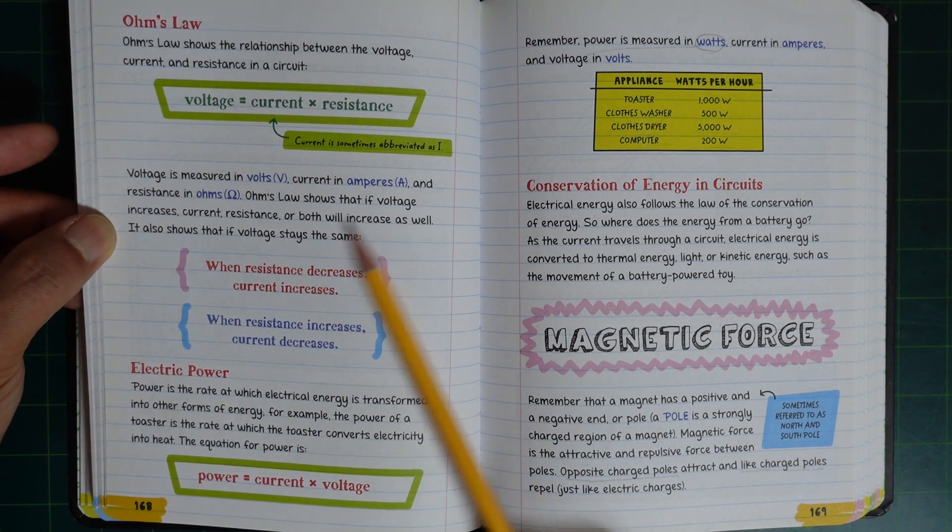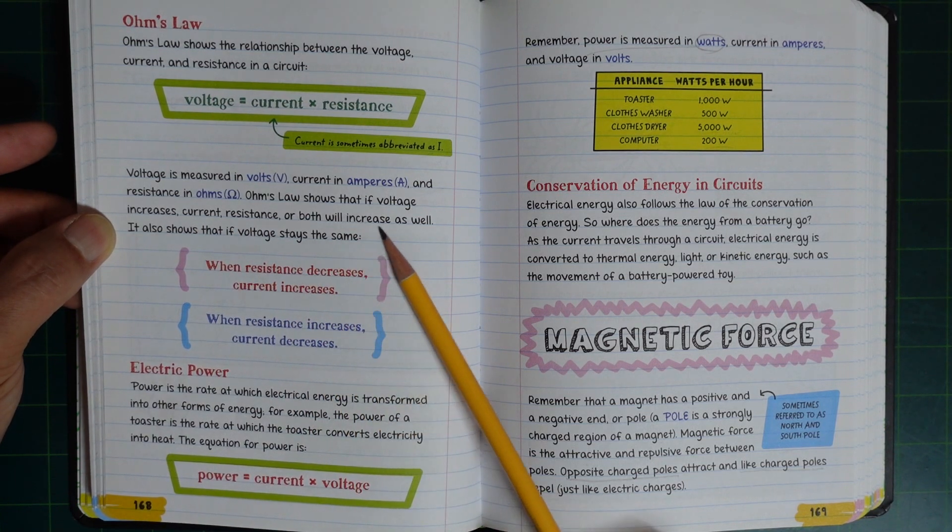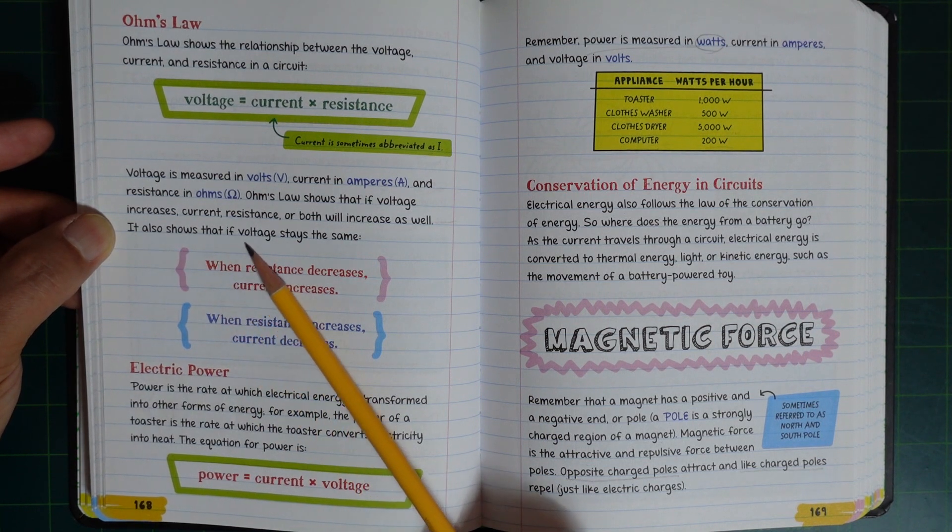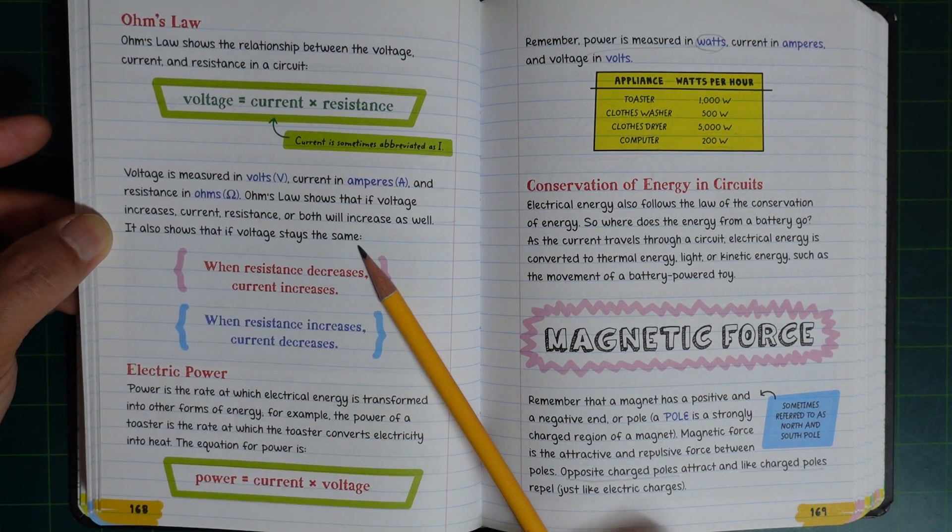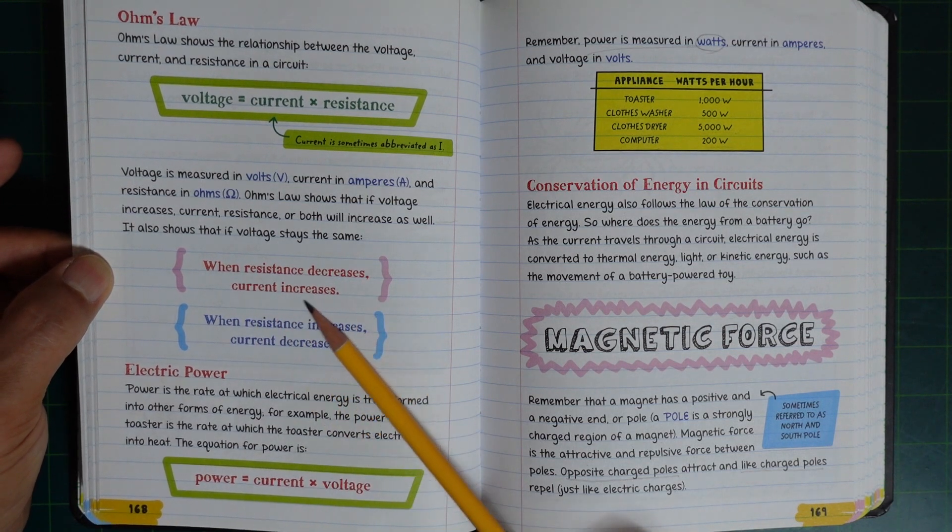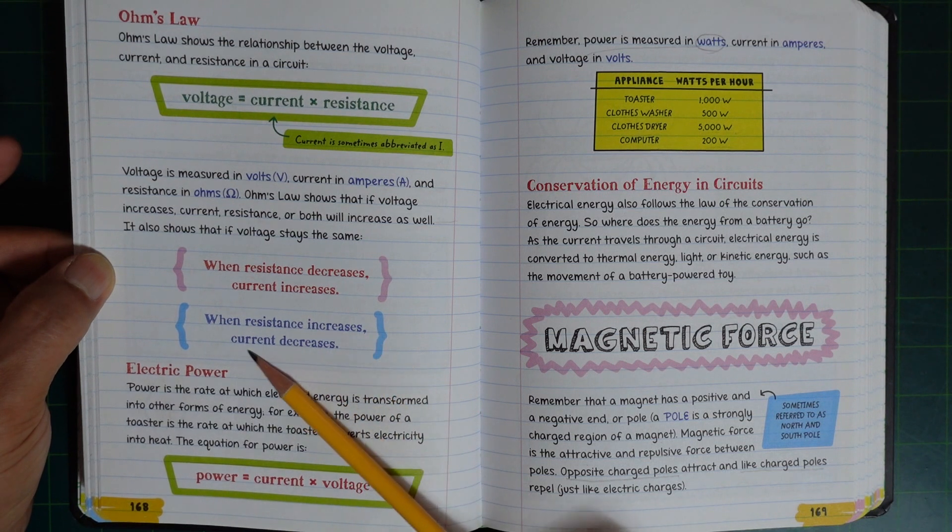Ohm's Law shows that if voltage increases, current or resistance will increase as well. It also shows that if voltage stays the same, when resistance decreases, current increases, and when resistance increases, current decreases.